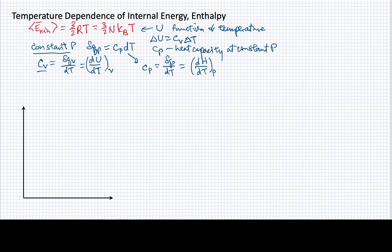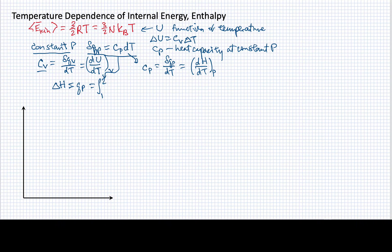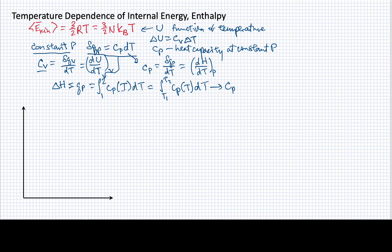Of course, if a process is not taking place at constant volume or constant pressure, then we'll have a different situation altogether. But these are the ones that will be most common in terms of our experience. If I want to consider what the change of enthalpy is, that would just be the heat expressed at constant pressure, and I could write this by integrating this relationship. So I would write the change from state 1 to state 2 as an integral from T1 to T2 of the heat capacity at constant pressure dT. And if that heat capacity at constant pressure turns out to be constant, we can write it simply as C_p times ΔT.